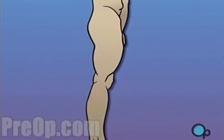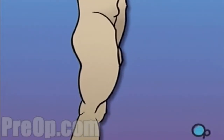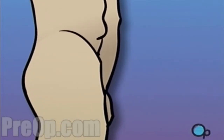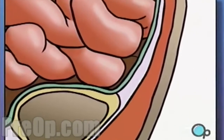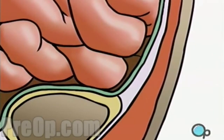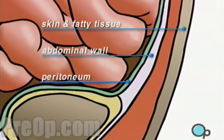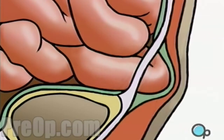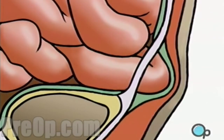They are going to continue with the introduction on hernia first. Hernia is usually a protrusion of an organ through the abdominal wall that usually contains the organ. They are trying to show that there is weakness in the abdominal wall that causes hernia.